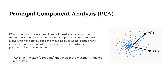Now let us look at Principal Component Analysis, or PCA. PCA is one of the most popular techniques for dimensionality reduction. It works by finding directions in the data called principal components where the data varies the most. These directions help us capture the maximum amount of information using fewer dimensions.